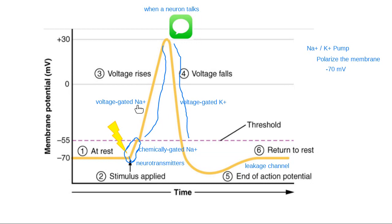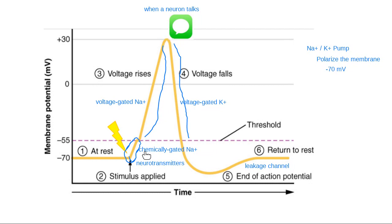A neuron can only talk to its neighbor when it gets to positive 30. Once I hit negative 55, I'm guaranteed to go all the way up. If I hit threshold, I'm going to get all the way to positive 30. It's just going to happen because of the way the voltage-gated channels work — as soon as one starts opening at negative 55, all of them open and we stay open. So I can't talk until positive 30, but hitting negative 55 guarantees I'll get there.